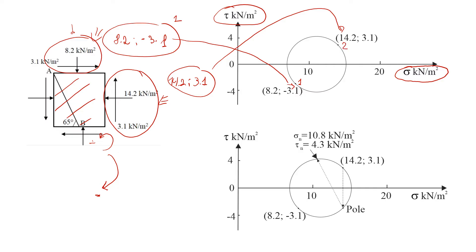With these two points we draw the circle — please watch the video explaining how to draw Mohr's circle for that step. Now we have the circle and the two points. The next step is to find the pole. The pole is a unique point — there is only one pole for each Mohr's circle. The beauty of this point is that once we know the pole, we can easily find stresses acting on any inclined plane, such as plane AB, using a simple graphical procedure without calculations.